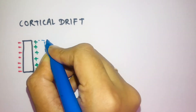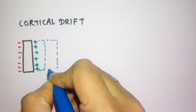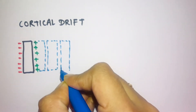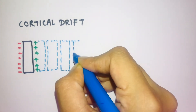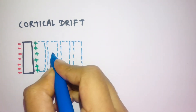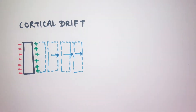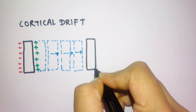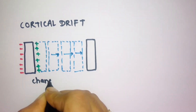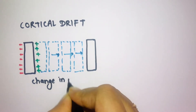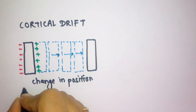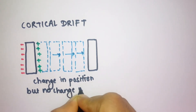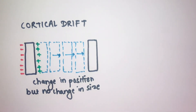In scenario one of cortical drift, bone is deposited on the left side and resorbed on the right side, so the bone moves in a forward direction into a newer position. Because there is equal deposition and resorption, it is not changing in size — only changing in position as it moves.